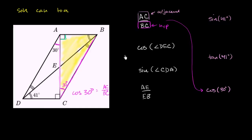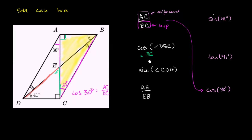Now let's look at the cosine of angle DEC. DEC is this angle right over here. Cosine is adjacent over hypotenuse. The adjacent side to angle DEC is EC. Side DE might seem adjacent, but DE is actually the hypotenuse. So the adjacent side is EC, and the hypotenuse is DE. The cosine of angle DEC equals the length of EC over the length of DE.